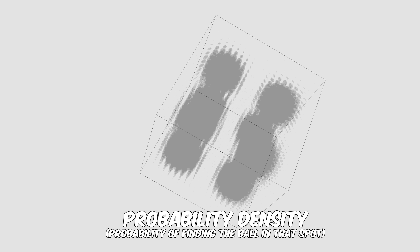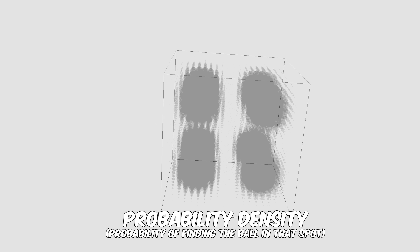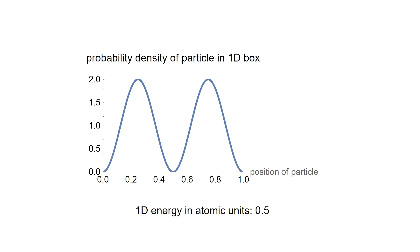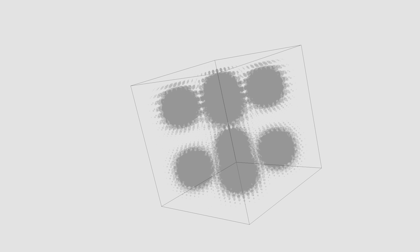The darker areas are the areas where I'm likely to find it, and the lighter areas are where I never find the particle when I check where it is in the box. Suddenly this particle that used to just act like a ball in a box that could be anywhere, suddenly has these nodes where it's usually found and never found. If I graphed these probable locations of the ball in one dimension, it would look exactly like a wave. So when small particles are trapped in a small box, they start to look like waves instead of particles.